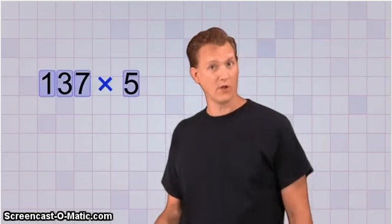Okay, the best way to learn this is to jump right in. Let's try 137 times 5. Now as you can see, this is a three-digit number times a one-digit number.